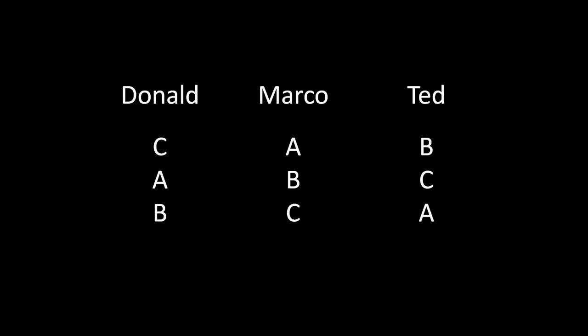I want to take a timeout here and note that each one of these individuals has a linear ordering. Donald's preferences are complete and transitive. Marco's preferences, complete and transitive. And Ted's preferences are complete and transitive. All three of these individuals are rational. Donald is a rational human being, Marco is a rational human being, and Ted is a rational human being. Comments below notwithstanding. Happy 2016, everyone.